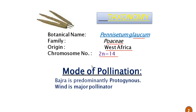In the mode of pollination in pearl millet, Bajra or pearl millet is predominantly protogynous. That means the gynoecium matures before the androecium, and that leads to cross-pollination. Pearl millet is predominantly a cross-pollinated crop and wind is the major pollinating agent.